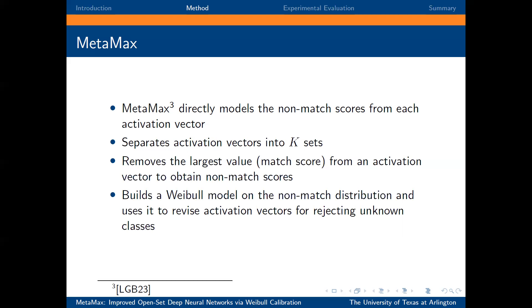During inference, we use the Weibull model to revise the activation vector by estimating the probability of belonging to an unknown class. Finally, we make the rejection decision based on the revised activation vectors.